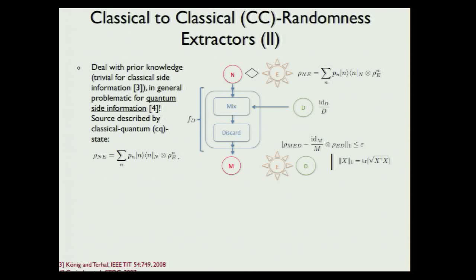In this setting we have a classical input correlated to some quantum system E. We have this input as a classical-quantum state, then we apply some function according to some seed D, and we want the output to be random but also not correlated to the quantum system anymore. This only has to be the case approximately, and the distance measure chosen is the trace distance. This corresponds to a strong extractor because we also write the seed in here.